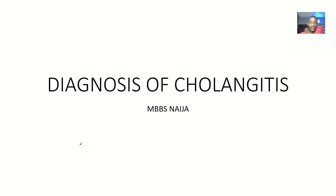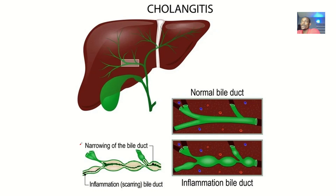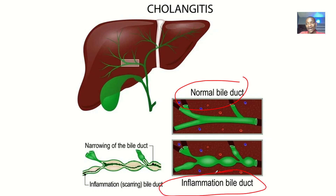Let's quickly look at the possible ways in which we can diagnose cholangitis. Before you can look at the possible ways to diagnose cholangitis, there are some things you should know. First of all, you should know what cholangitis is. Now look at the picture of a normal bile duct, then look at the picture of an inflamed bile duct. Cholangitis simply means there's an inflammation of the bile duct.